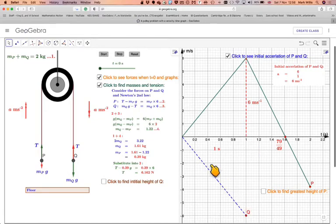the area under the graph here will give me the distance that Q travels and don't forget that Q travels from here down to this point here and that will give me the initial height assuming that these two are at the same level when they start. So if we click here the area here will give me the initial height so it's just going to be a half times one times six which will give me that they were originally three meters above the ground